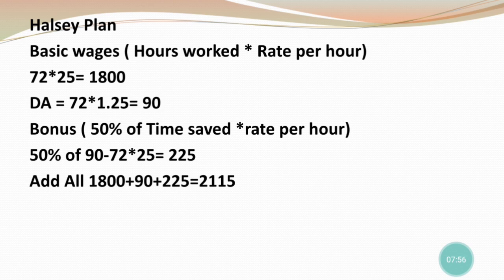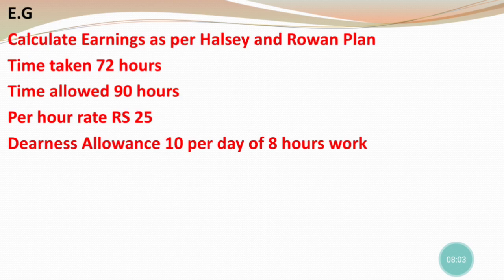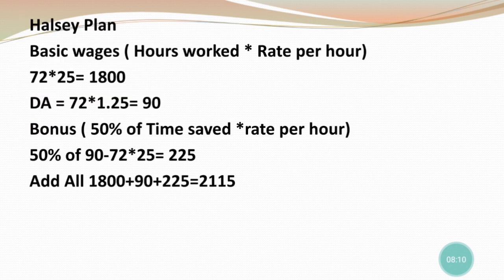Now the Halsey bonus formula: 50% of time saved × rate per hour. Time saved = 90 − 72 = 18 hours. So bonus = 50% of 18 × 25 = 225. Adding all three: basic wages 1800 + dearness allowance 90 + bonus 225 = total earnings of 2115 as per the Halsey plan.